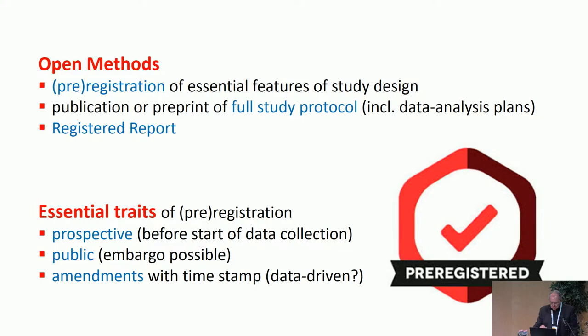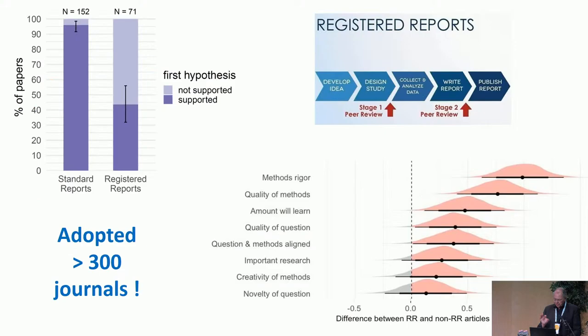The essential traits of registration — that's the term in biomedicine — and pre-registration — the term in social sciences — are that it is prospective: you do it before you start collecting data. It's nice when it is public, so everyone can check what you did, but that's not essential because repositories allow you to have an embargo for a few months or years if justified. Amendments can be timestamped and added to the registration. And then there is the registered report — it's wonderful, I love it.